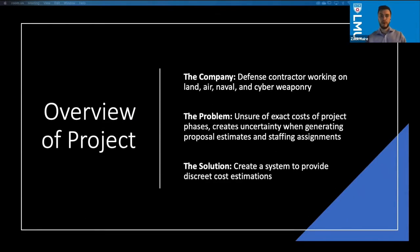A quick overview of the project: the company is Northrop Grumman, a defense contractor working on land, air, naval, and cyber. The problem, in short, is that they're unsure of the exact costs of various project phases — in this case, inspections — and this is creating uncertainty when generating proposals for new projects.